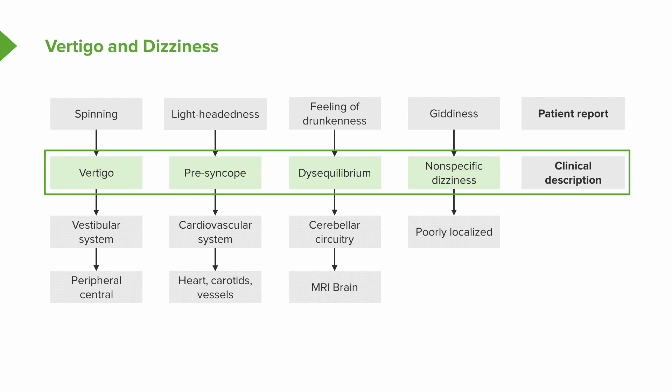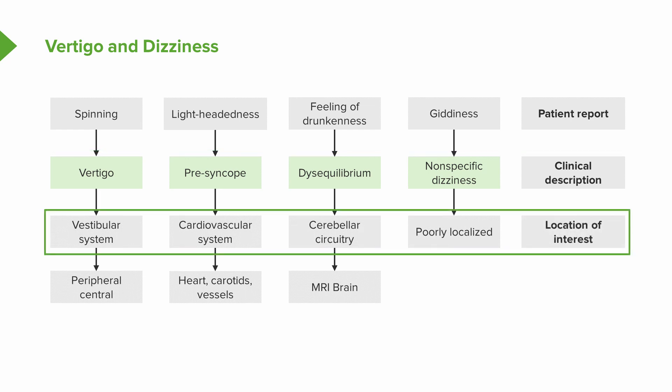From the patient's report, I arrive at my own clinical description: do I think this is vertigo, pre- or syncope, disequilibrium, or nonspecific dizziness? That helps me focus my examination on the location of interest. If I'm worried about vertigo, I'll interrogate the vestibular system and look at vestibular function on examination. With presyncope, I look at the cardiovascular system; with disequilibrium, comprehensive cerebellar testing; or if it's nonspecific dizziness, I look at other contributing factors.